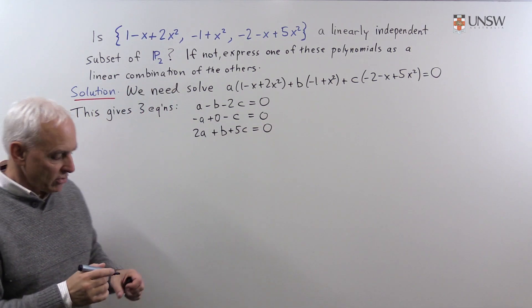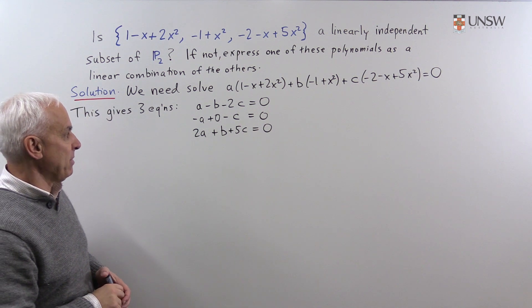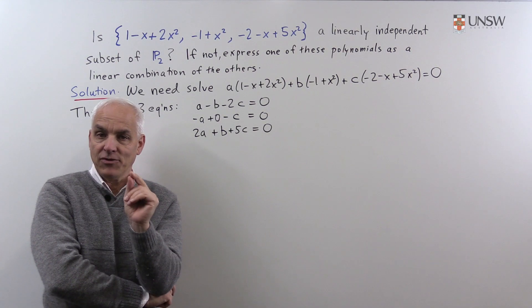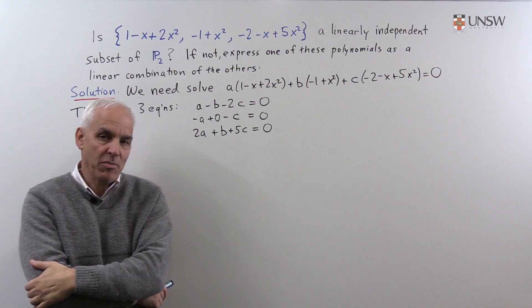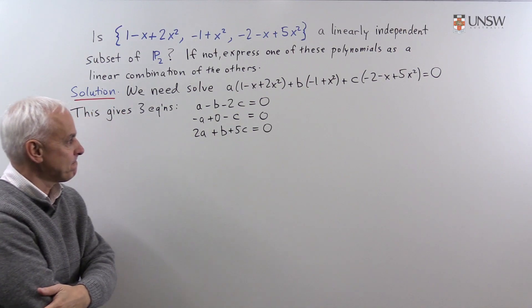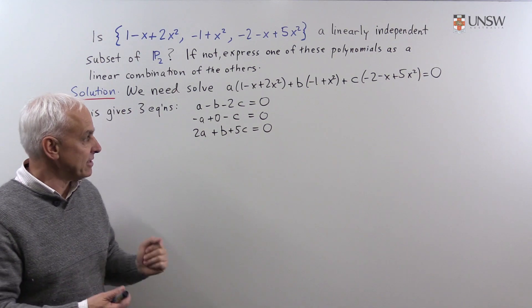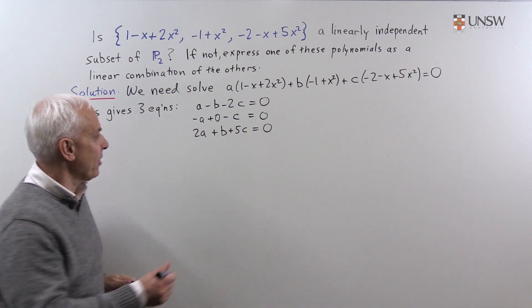So we want to solve this system of linear equations for a, b, and c. If the only solution is a equals b equals c equals 0, then the three polynomials are linearly independent. Notice that this is a homogeneous system because the right-hand side entries are all 0.